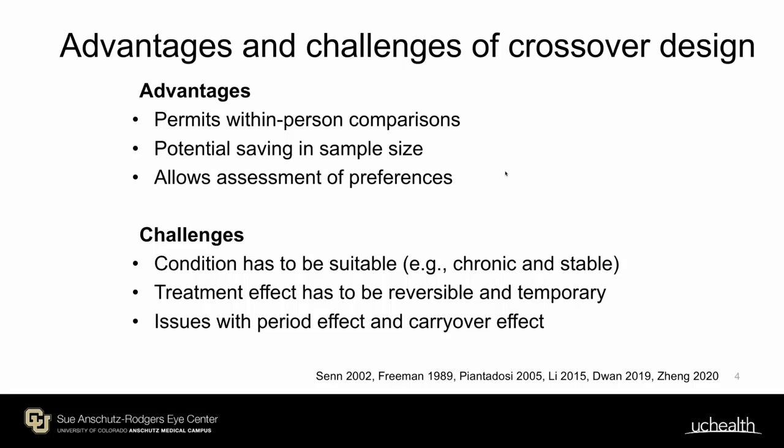However, the crossover design is not suitable for all conditions. It works well for diseases requiring chronic medication or treatment, such as asthma, hypertension, and diabetes. The underlying disease must have a constant intensity during all treatment periods, and the effect of treatment needs to be restricted to the period in which it is applied. In other words, interventions should not lead to permanent change or long-term modification of the disease course. There are also issues with period effects and carryover effects, which we will discuss in detail later.